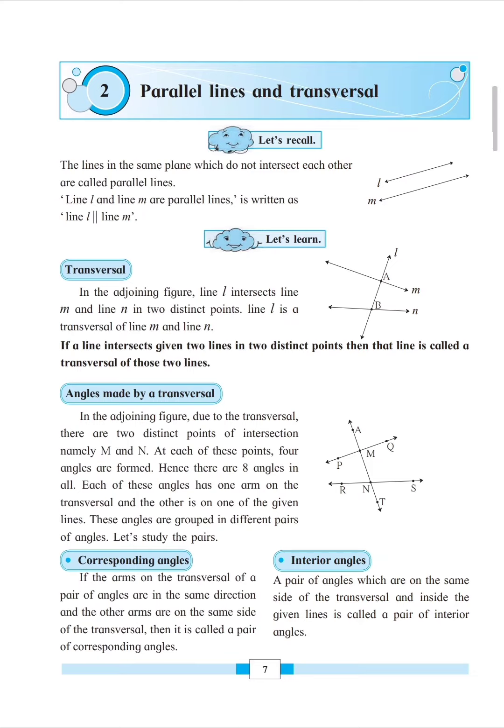What are alternate angles? Alternate angles have two parts: interior alternate and exterior alternate.